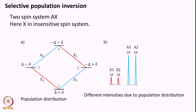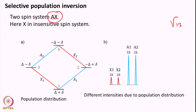Now let us move to the interesting concept of selective population inversion and how we can enhance the signal of one spin by doing this. The two spins we are considering have different gamma values — they are not proton-proton but can be carbon-proton or nitrogen-proton. Let us consider this as an AX spin system, meaning a weakly coupled spin system like proton and carbon. Proton at 600 MHz resonates at 600 MHz and carbon resonates at 150 MHz with a J coupling of typically 120 to 140 Hz. X is an insensitive nucleus — its gamma is 4 times less than proton.